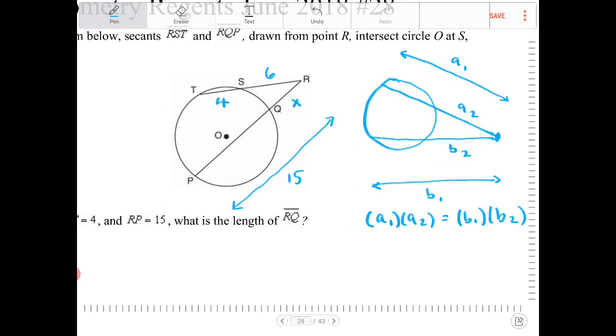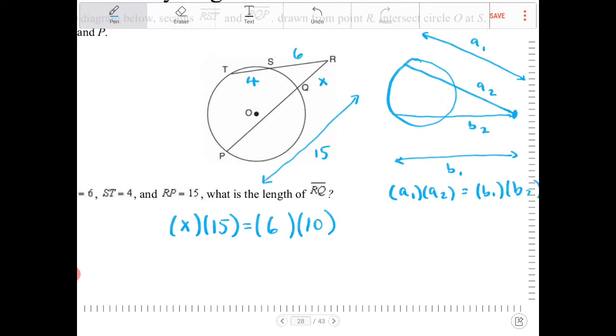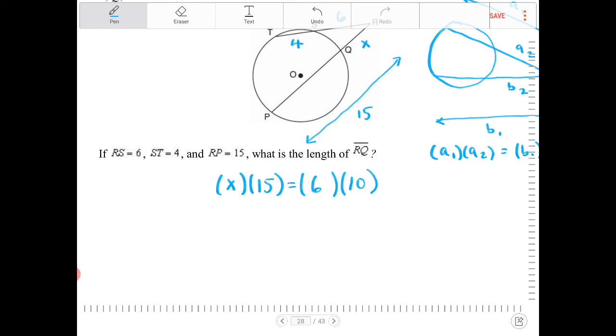So knowing this fact now, we can then set up a very similar equation. I can then say X, which is the length of RQ, right? So X times the full length of the secant that contains RQ, that's PR. So I'm going to multiply that by 15, is equal to RS. That's a segment outside of the circle. So that's 6 multiplied by the full length of the secant, and that would be a length of 10, 10 because 6 plus 4. And now I have enough information to solve for X.